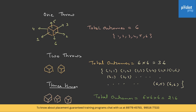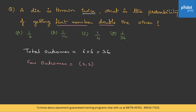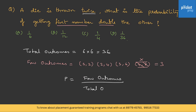Let's do a question: a die is thrown twice. What is the probability of getting the first number double the other? Total outcomes when thrown twice is 6 into 6 = 36. For favorable outcomes, if the first number is 1 the second is 2, giving (1,2); if 2 then 4, giving (2,4); if 3 then 6, giving (3,6); if 4 it would need 8 — but a die has a maximum of 6, so that's not possible. Only 3 possible favorable outcomes. Probability is 3 upon 36, that is 1 by 12 — option B.